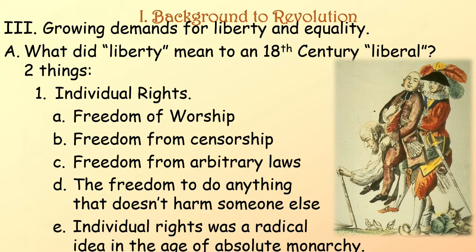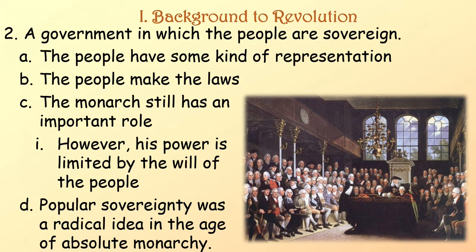Growing demands for liberty and equality — that's our second process. What did liberty mean to an 18th-century liberal? It meant two things. Number one, individual rights — including freedom of worship, freedom from censorship, freedom from arbitrary laws, and freedom to do anything that doesn't harm someone else. Individual rights was a radical idea in the age of absolute monarchy. Number two, a government in which the people are sovereign — the people have some kind of representation, as studied with John Locke. The people make the laws, and the monarch still has an important role, but his power is limited by the will of the people. Popular sovereignty — the people ruling — was a radical idea in the age of absolute monarchy.